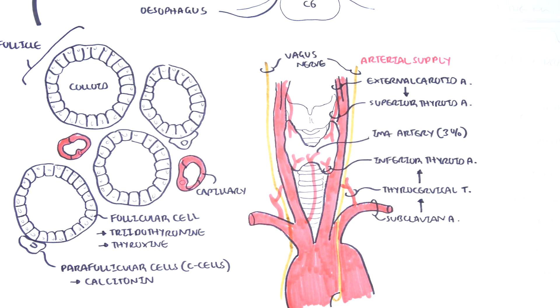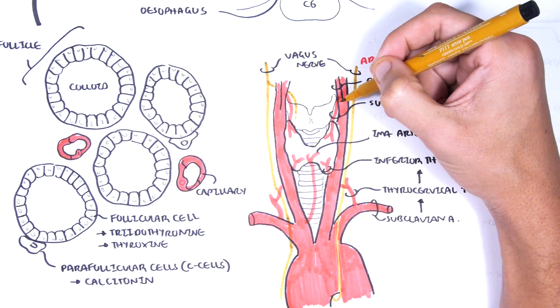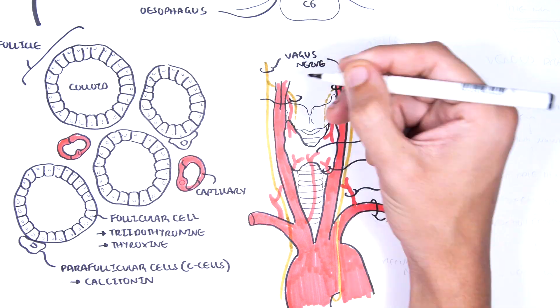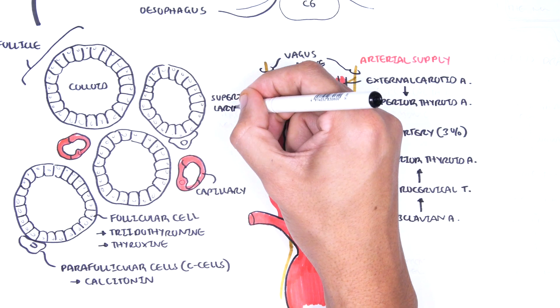The vagus nerve branches to form the superior laryngeal nerves which partly supply the thyroid gland but mainly the laryngeal muscles.